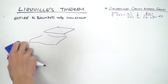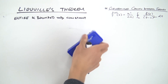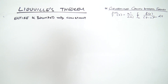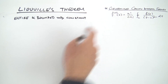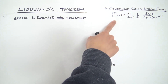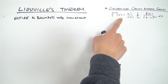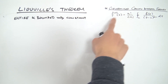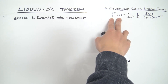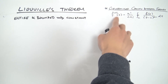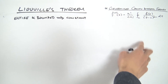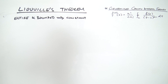To prove this result we will need another result: the generalized Cauchy integral formula. I've made a video on this before — it expresses the nth derivative of a function in terms of a contour integral, and that's actually where we're going to start with this proof.